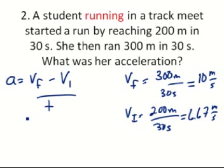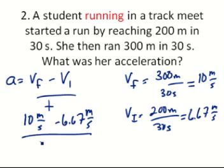The final velocity was 10 meters per second, and the initial velocity was 6.67 meters per second, all over time it took for 30 seconds. When we enter that into the calculator, we get a positive acceleration of 0.11 meters per second squared.